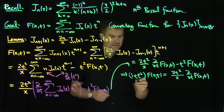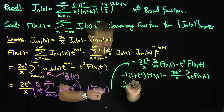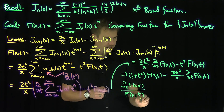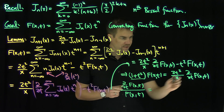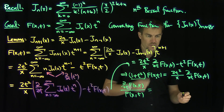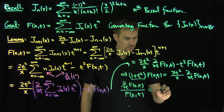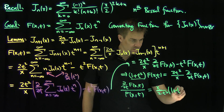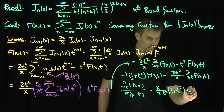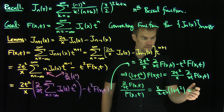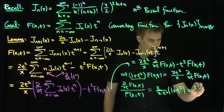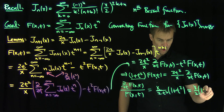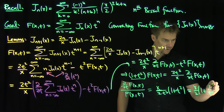Now I can rewrite this as the partial derivative with respect to t of f of x and t, divided by f of x and t, equal to x over 2 times 1 plus t squared divided by t squared, which simplifies to x over 2 times 1 plus 1 over t squared.